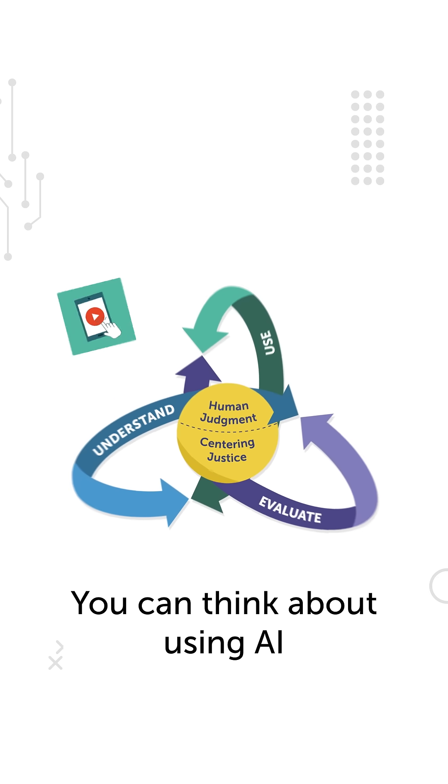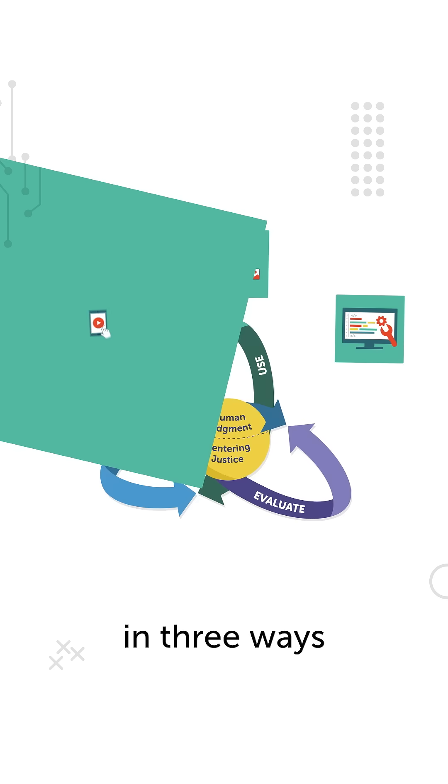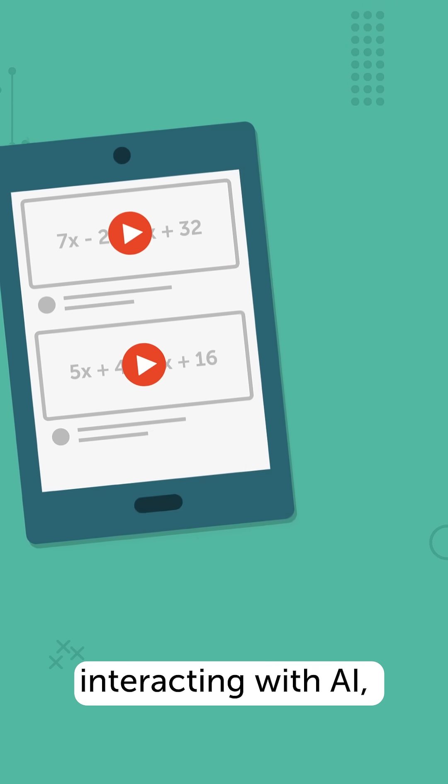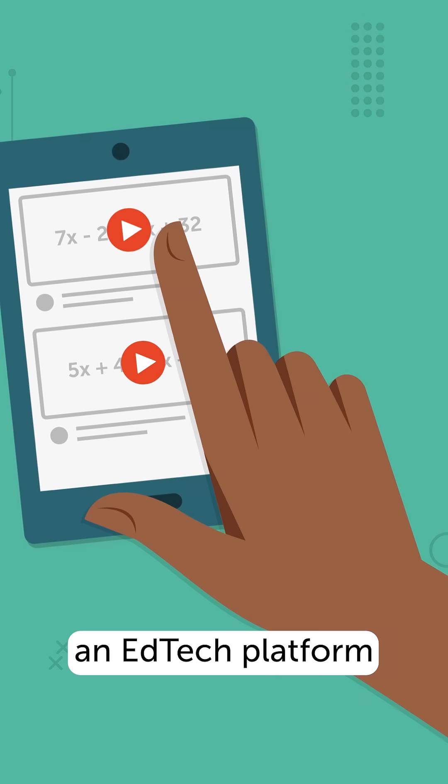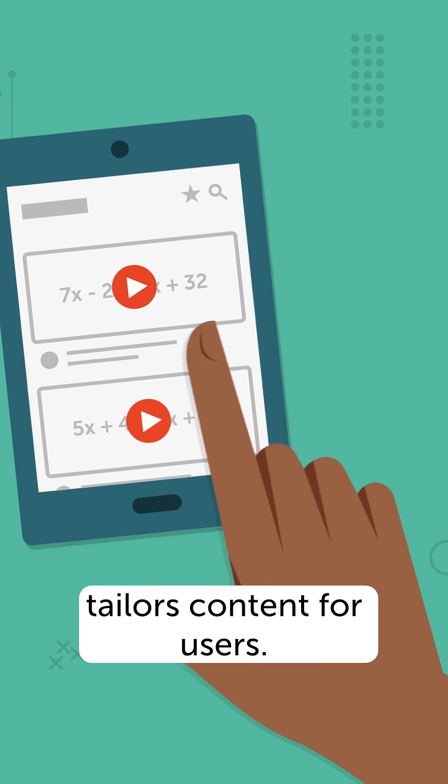You can think about using AI in three ways. Interacting with AI, such as using an edtech platform that automatically tailors content for users.